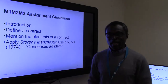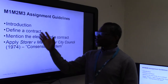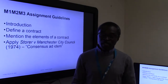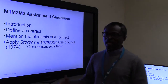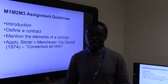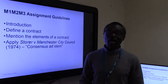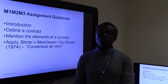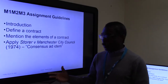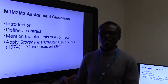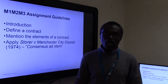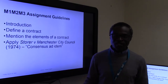The first thing to think about in any essay is to think about the essay structure. Because this is mainly based on a contractual relationship, remedies, and consumer rights, the best place to start is to define what a contract is in your own words. Then go on to mention very briefly the elements of a valid contract: offer and acceptance, consideration, intention, capacity, and form.